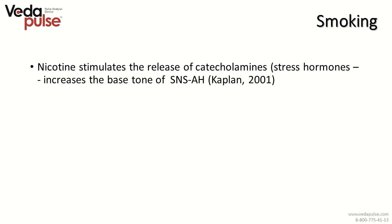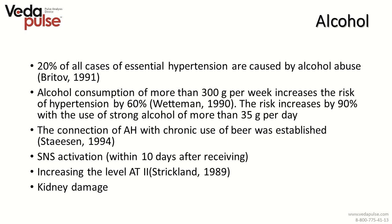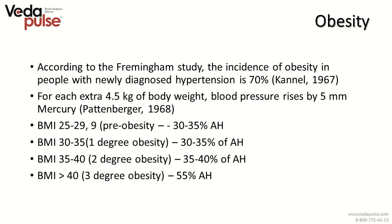Smoking leads to increased blood pressure as nicotine stimulates release of catecholamines or stress hormones which provoke a hypertensive reaction. For people predisposed to hypertension, alcohol is extremely dangerous — 20% of all essential hypertension cases are caused by alcohol abuse. Alcohol consumption of more than 3 grams per week increases the risk of hypertension by 60%, and the risk increases by 90% with strong alcohol of more than 35 grams per day. A morning hangover activates the sympathetic nervous system, causing increased blood pressure, and this agitated state remains for about 7 days after alcohol intake.